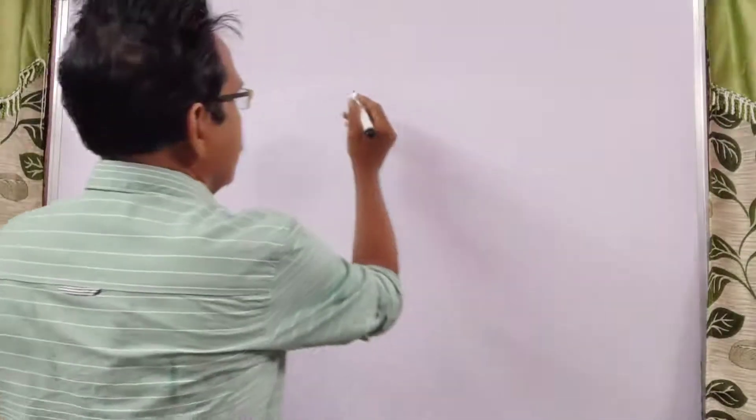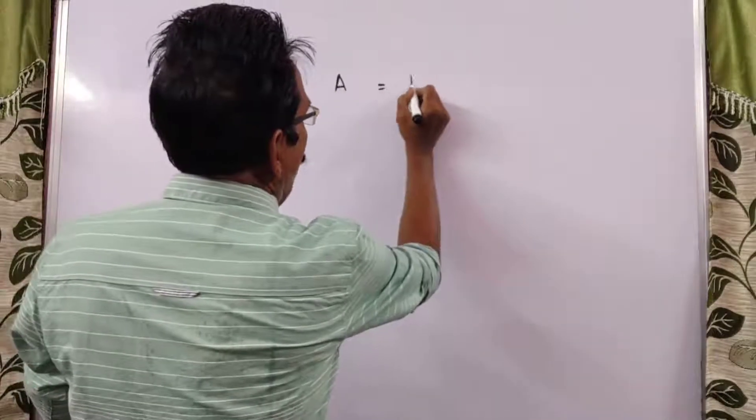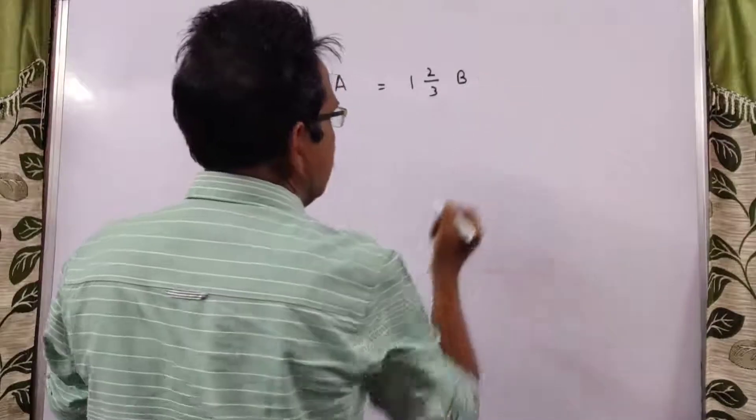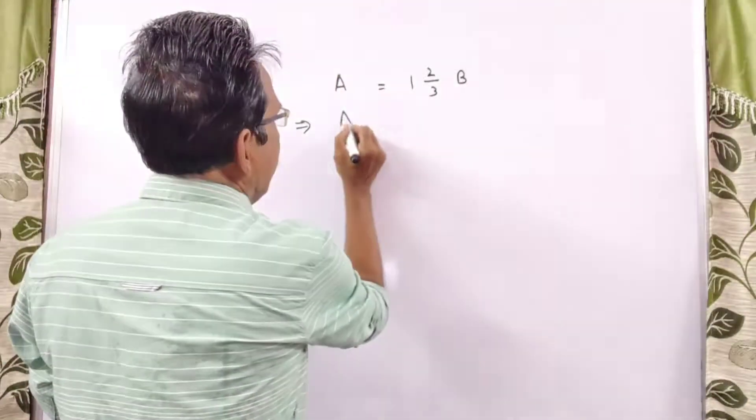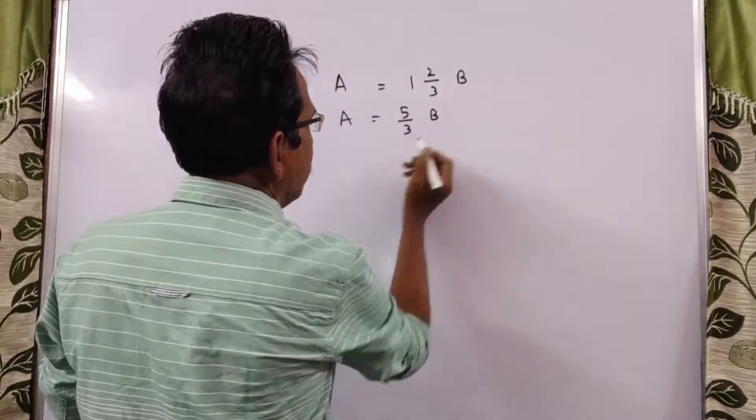See, A runs 1 2/3 times as fast as B. That implies A is equal to 5/3 times of B.